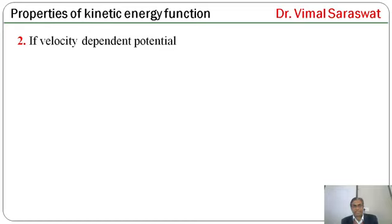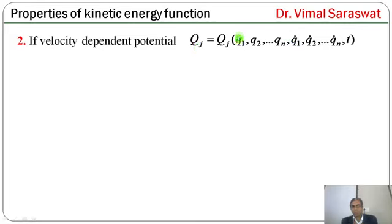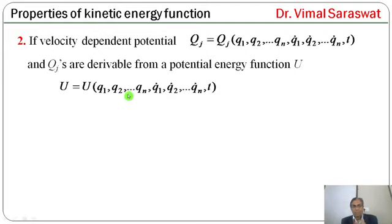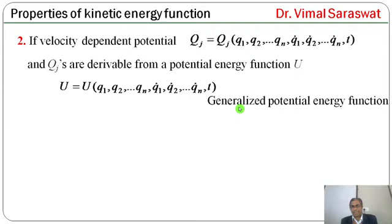Second case: if a velocity-dependent potential exists. If the potential is velocity-dependent, then Qj is a function of position, velocity, and time — Q, Q_dot and T. The generalized forces Qj are derivable from a potential energy function U, where U is the generalized potential energy function — a function of position, velocity, and time.